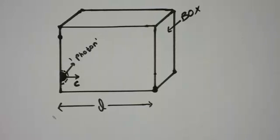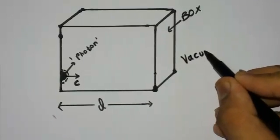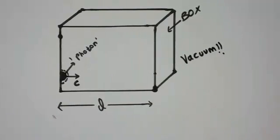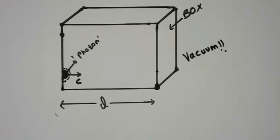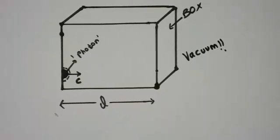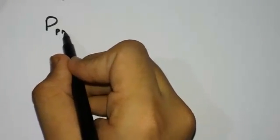A very important condition is that the outside is totally vacuum — in space there is a box, and inside the box there is a photon. Now let's write some important equations, starting with the momentum of the photon.